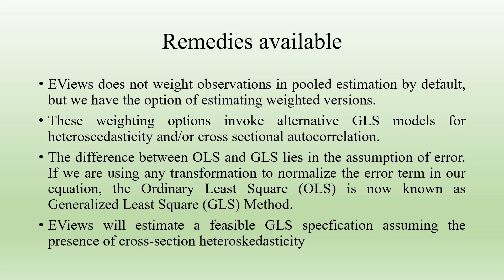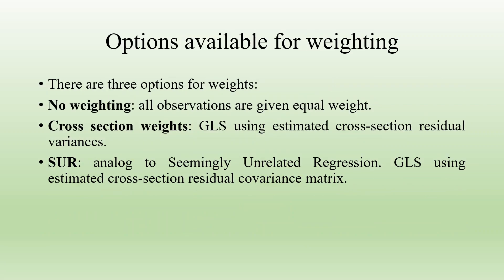eViews will estimate a feasible GLS specification, assuming the presence of cross-section heteroscedasticity. There are three options available. First, no weighting — all observations are given equal weights. Second, cross-section weights, i.e., GLS using estimated cross-section residual variances. And third, SUR — seemingly unrelated regression — GLS using the estimated cross-section residual covariance matrix.